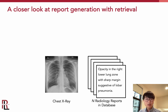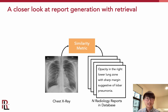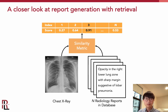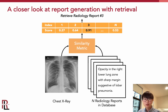So how does retrieval work in reality? We have a chest x-ray as input as well as a database of N reports. We use a predefined similarity metric that calculates how similar the chest x-ray image is to every single report in the database, then retrieve the report that scores the highest similarity score — in this case, the third report.